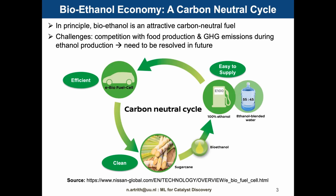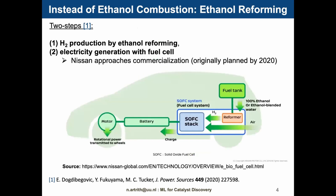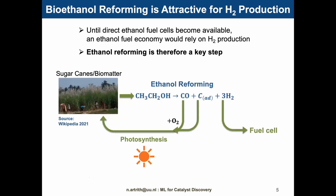There are some difficulties, for example, the competition with food production and greenhouse gas emissions from farming, but hopefully those can be resolved in the future. It is cleaner and more efficient to first reform ethanol into hydrogen and then generate electricity with fuel cells. This is, for example, the design of the e-biocar that Nissan plans to commercialize already soon.